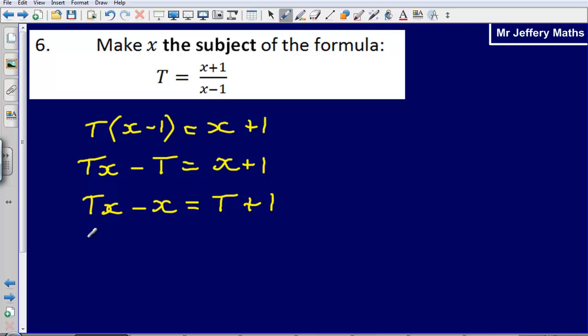Then I'm going to factorise at this point. So that's going to give me x bracket T minus 1 is equal to T plus 1.